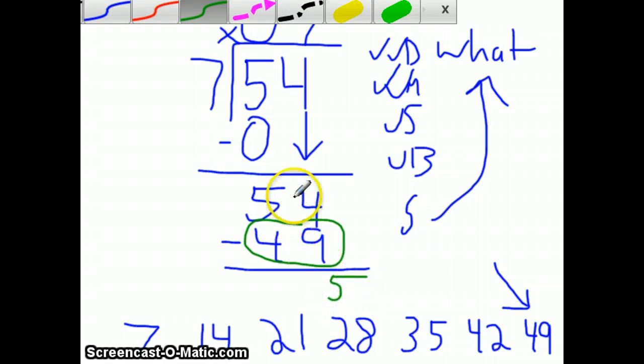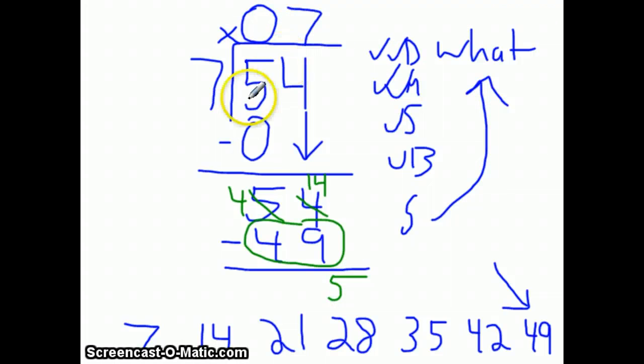Or you could have borrowed and go, you can't take 4 away from 9, so you cross out, borrow from the 5, make it a 4, make this into a 14. And in this one special case, 5 would still be the answer. So your final answer to this long division problem then would be 7, remainder 5. So 7, remainder 5.